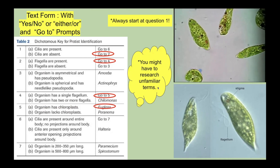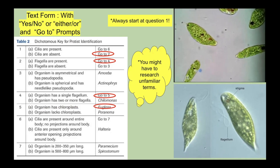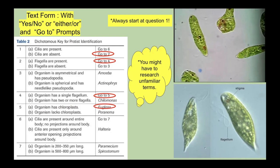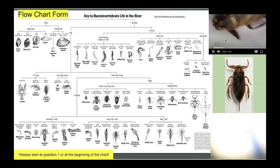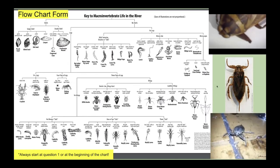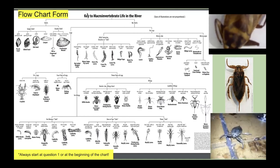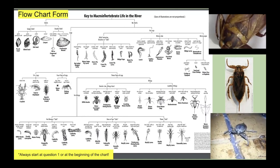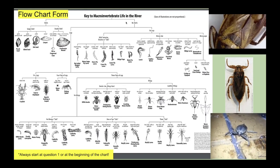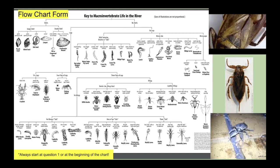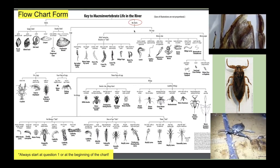There is another type — the flowchart form. We'll use this flowchart to identify an aquatic insect. Start at the very top: options are shells or no shells. Our organism has no shells. Next options are no legs or legs — our organism has legs. Then: 10-plus legs, four pairs, or three pairs of legs? We count one, two, three pairs.